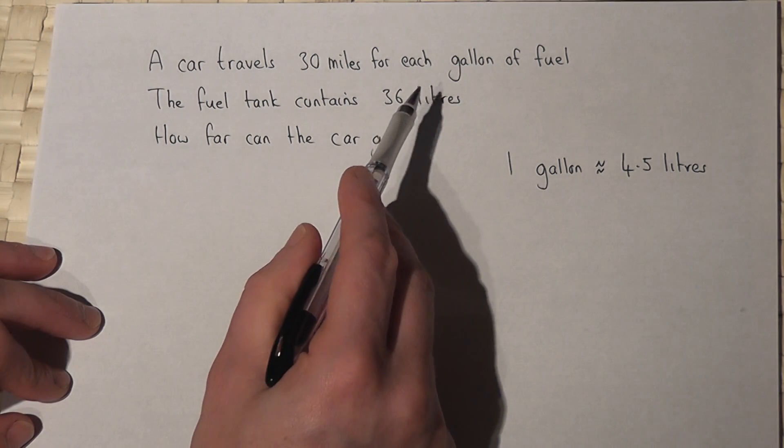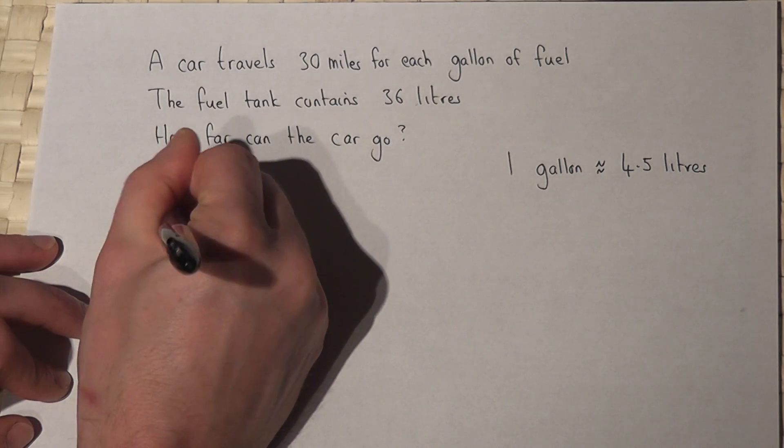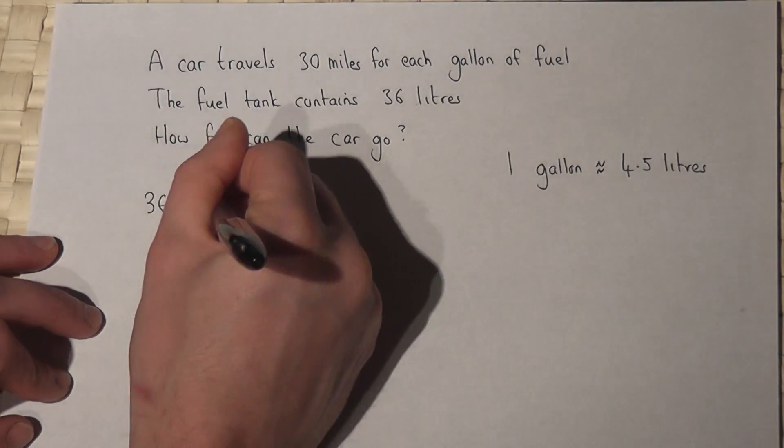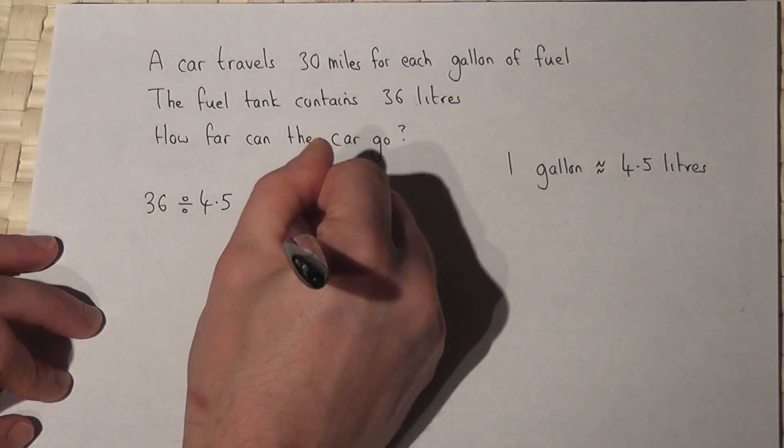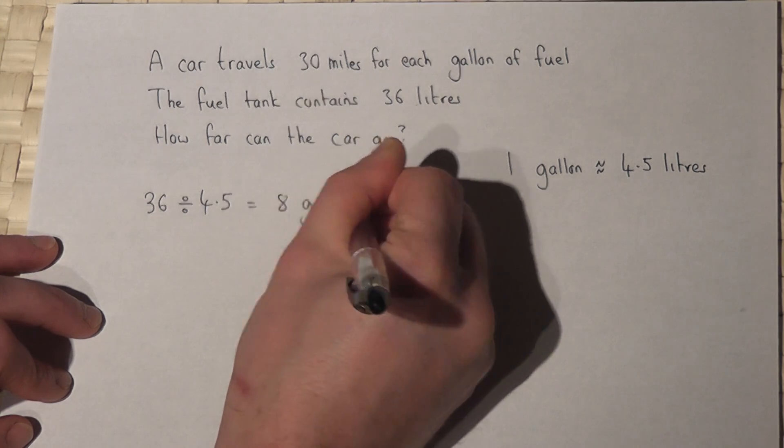So I can convert this into gallons by doing 36 liters divided by 4.5, which is the same as 8, so that's 8 gallons, approximately.